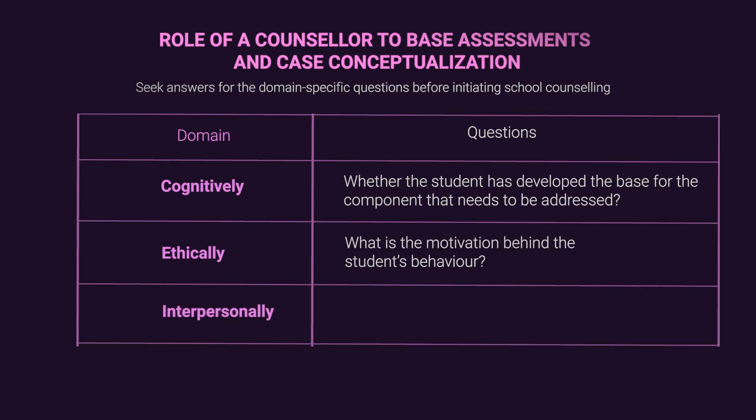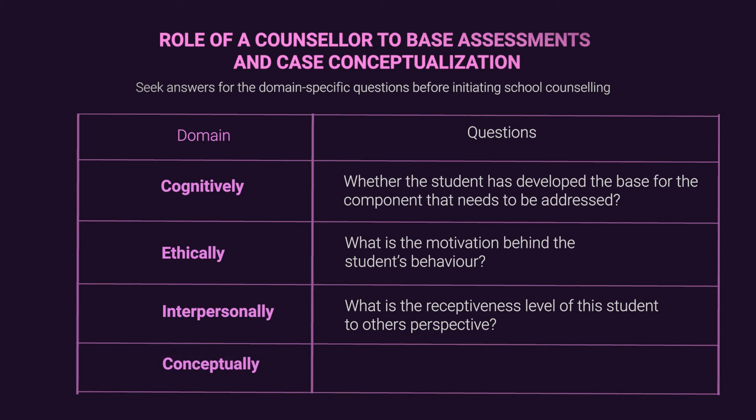In the interpersonal domain, the question to be asked is: what is the receptiveness level of this student to others' perspectives? If there is less receptiveness, asking the student to tell you how others in a conflict feel will be difficult or impossible. An 'I don't know' statement in such cases does not mean resistance. In the conceptual domain, the question is: what is the base structure level of the student? Those at higher stages feel motivated to deal with greater ambiguity, while students at lower stages may need more information and direction.